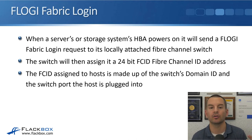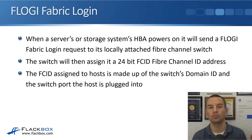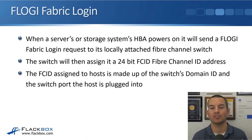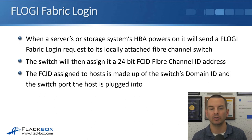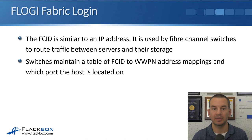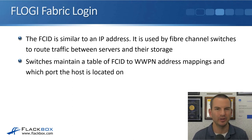When a server's or storage system's HBA comes online, it sends a FLOGI — a Fabric Login request — to the directly attached switch. That switch will then assign it a 24-bit FCID, a Fibre Channel ID address. The FCID assigned to hosts is made up of the switch's domain ID and the switch port that the host is plugged into. The FCID is similar to an IP address, but not exactly the same.